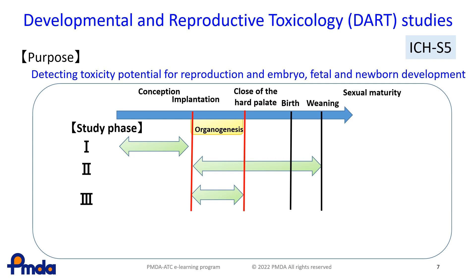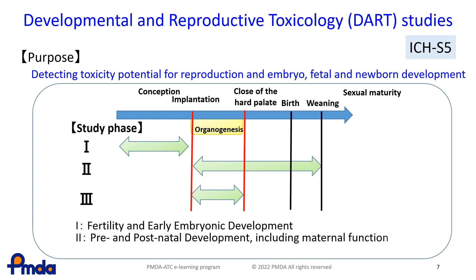DART studies are required to investigate all effects of pharmaceutical agents on reproductive organs, fertility, fetal development, gestation, lactation, and pups. Usually three types of studies are conducted to investigate all these items. For evaluation of organogenesis in particular, studies are conducted in rats and rabbits.